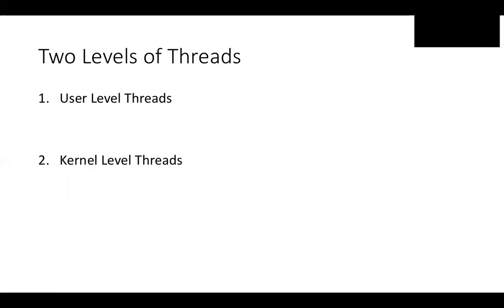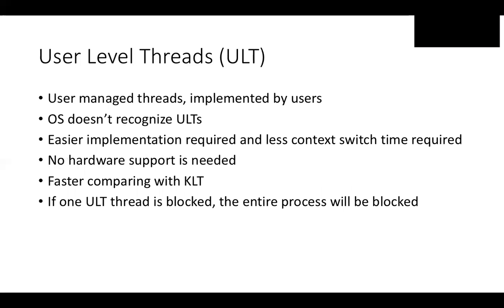There are two levels of threads: user-level threads and kernel-level threads. For user-level threads, the user manages and implements all the threads, and the OS doesn't recognize them. It is easier to implement and requires less context switch time compared with kernel-level threads. No special hardware is required, and it is relatively faster. However, the disadvantage is that if one user-level thread is blocked, the entire process becomes blocked.